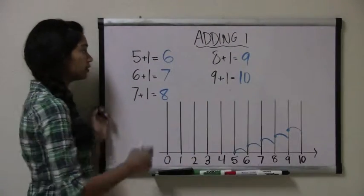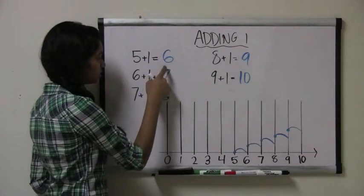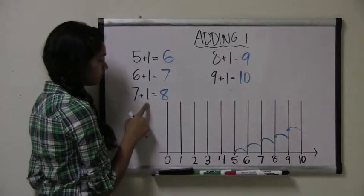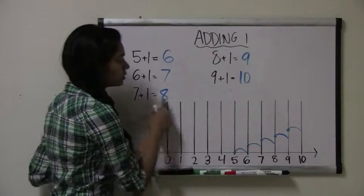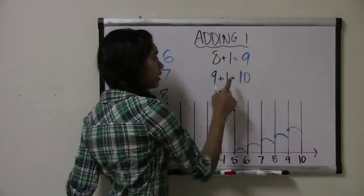So in review: 5 plus 1 equals 6. 6 plus 1 equals 7. 7 plus 1 equals 8. 8 plus 1 equals 9.